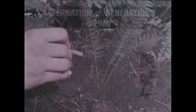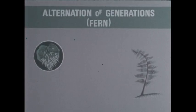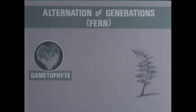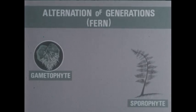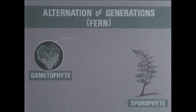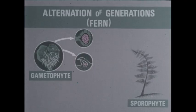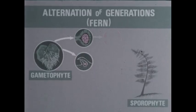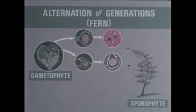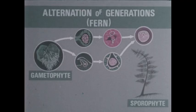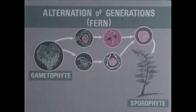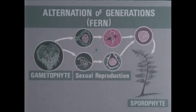Let's review alternation of generations in a fern. As with the moss, we may begin our study with the gametophyte or the sporophyte generation. The mature gametophyte, called a prothallus, has sex organs — male or female. These produce sex cells, sperms or egg cells, which combine to produce a fertilized egg. From this, a sporophyte develops through sexual reproduction.